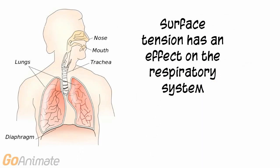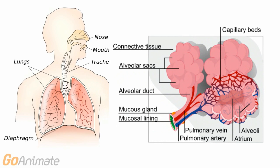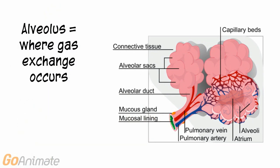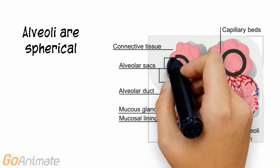Surface tension plays a role in the respiratory system. The tiny alveolus is the part of the lung that exchanges oxygen and carbon dioxide with the blood. The spherical alveoli form clusters.